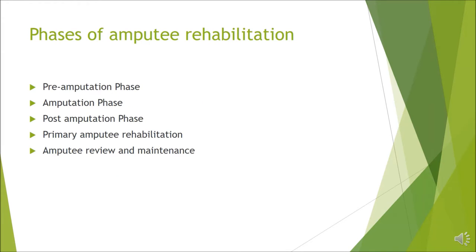There are five phases of amputee rehabilitation. The first phase is the pre-amputation phase, which involves the period before amputation until it becomes a treatment option. The second phase is the amputation phase. Thirdly, the post-amputation phase, which involves stump care following amputation and other rehab interventions. Followed by the primary amputee rehabilitation phase, once the patient enters an inpatient rehab program aiming at delivery of proper prosthetics. Finally, the follow-up phase involving amputee review and maintenance.